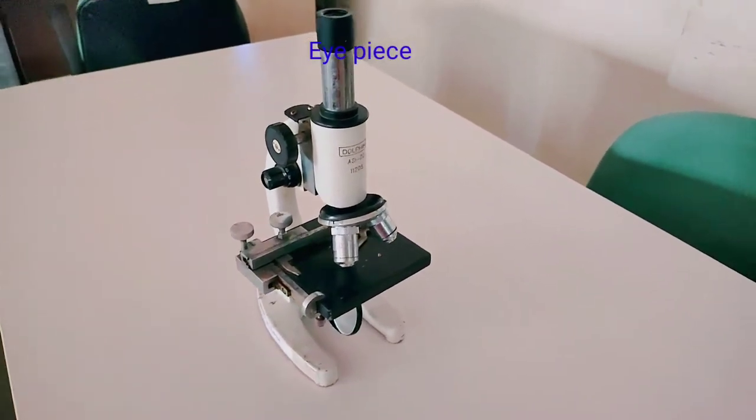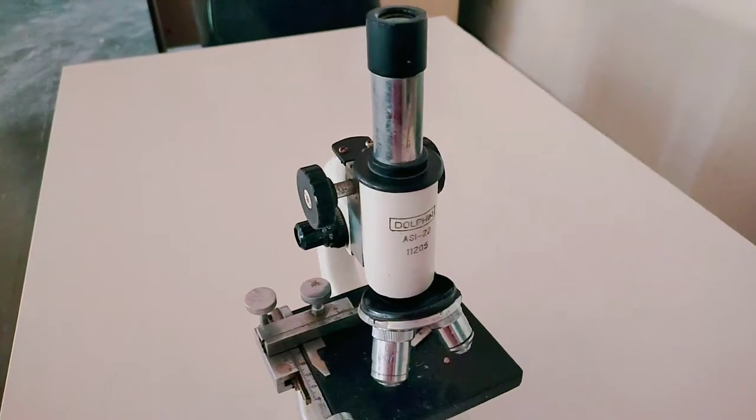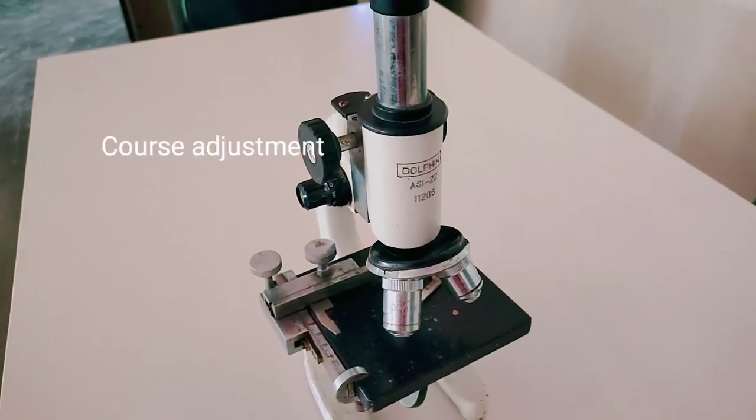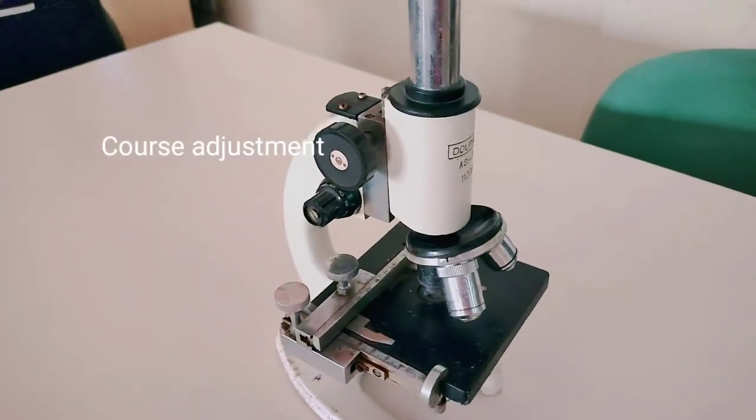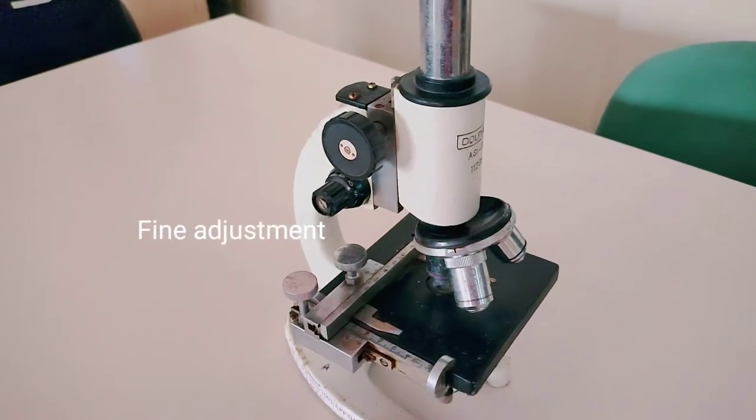This one is the eyepiece, then body tube, after that we have objective lens, stage, coarse adjustment screw, then we have a fine adjustment screw.